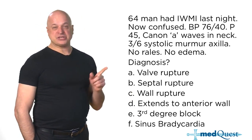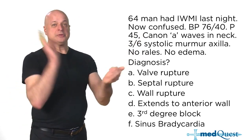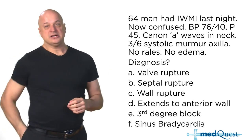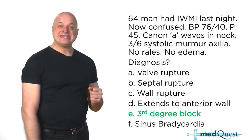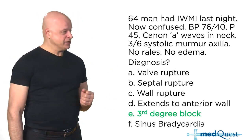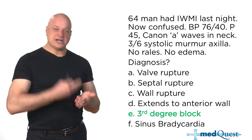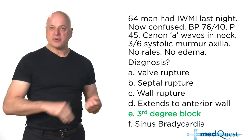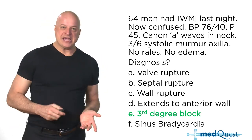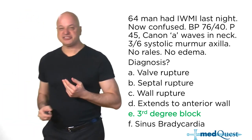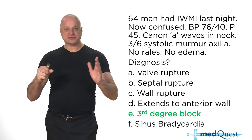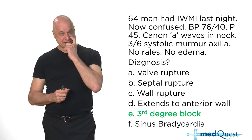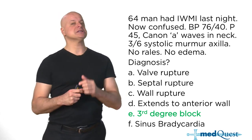Bradycardia, hypotension, and Cannon A waves. Two Irishmen in 19th-century Dublin described bradycardia, hypotension, and Cannon A waves without the EKG — before Eindhoven won the 1908 Nobel Prize for inventing the electrocardiogram.